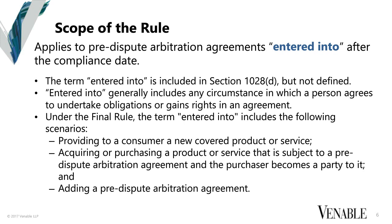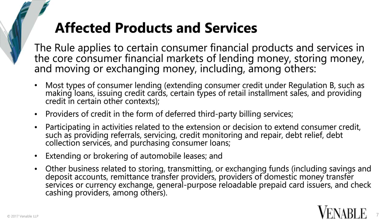The products and services that are affected are very similar to what was proposed by the Bureau — core financial products and services: consumer lending, providers of credit including deferred third-party billing services, consumer credit monitoring, servicing, repair, debt relief, debt collection, including automobile leases, and storing, transmitting, and exchanging funds. Engaging with the movement of money is really going to trigger this. The applicable term is 'provider,' which will be a little bit more narrow than the Bureau's whole scope of a covered person under Dodd-Frank.